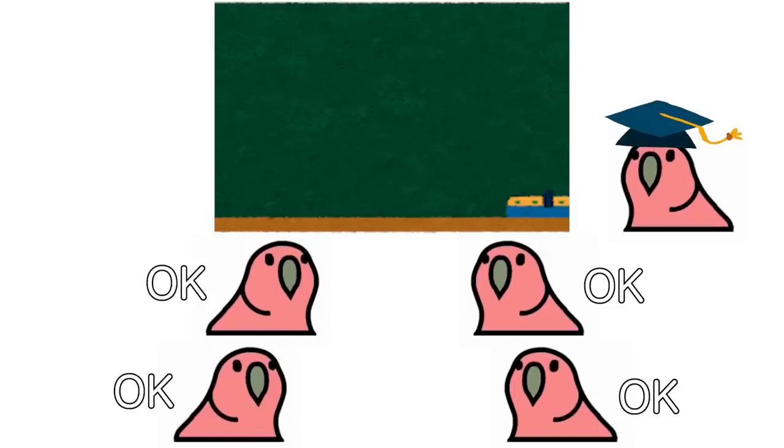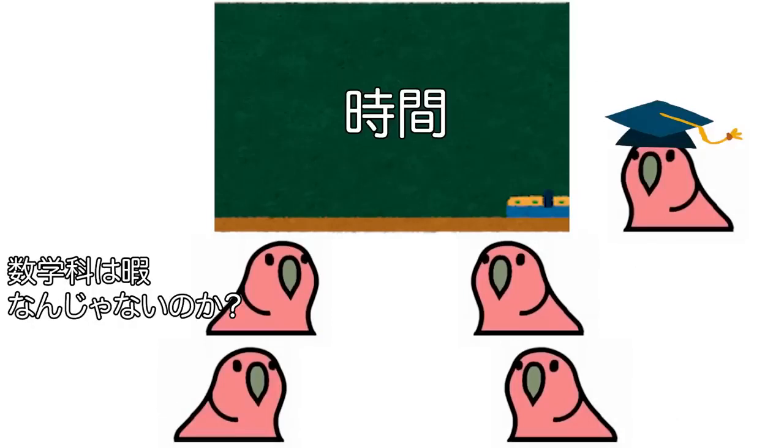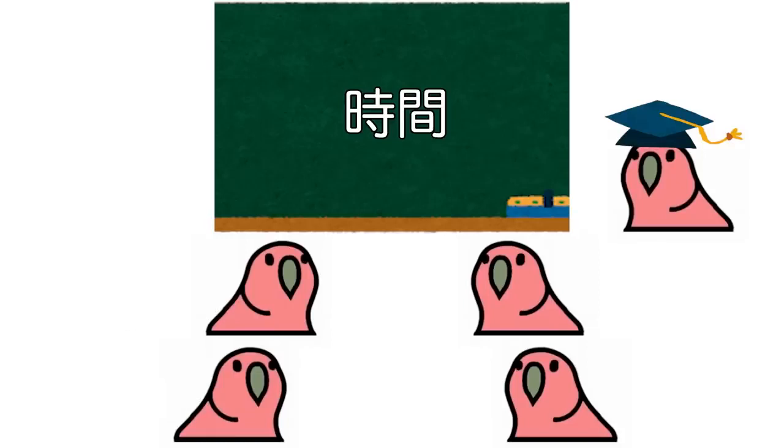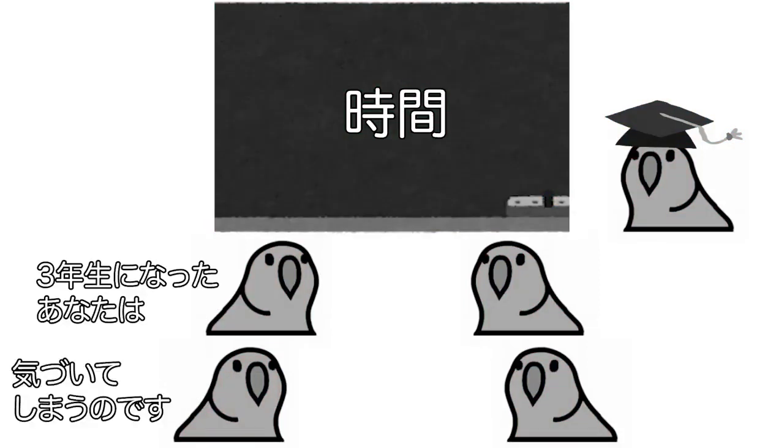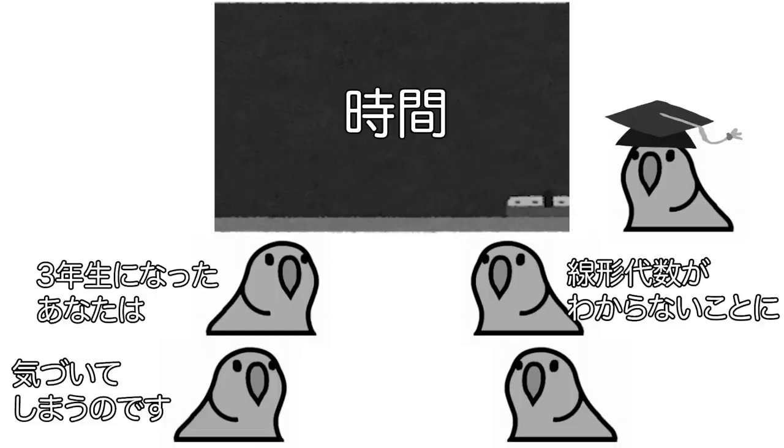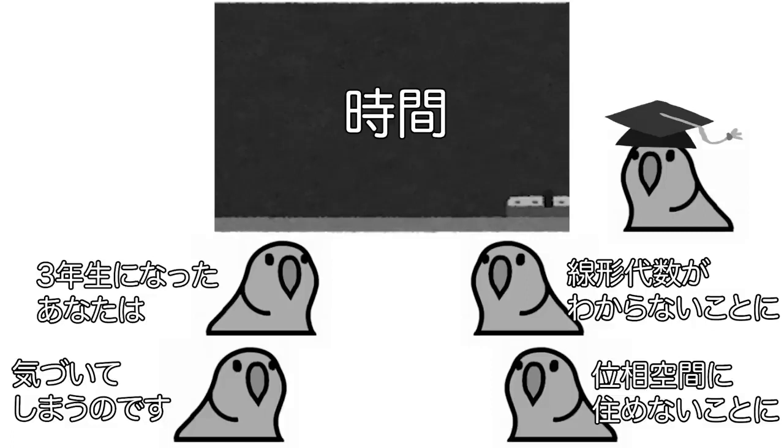Okay, first. Suga Kakawahima N'unjanenoka. Sana Hazuwa. Sanan Senanata Anatawa. Kidzuit Shimaono Desu. Senkei Daisuga Wakara Naikotoni. Aiso Kuakana Tsuma Naikotoni.